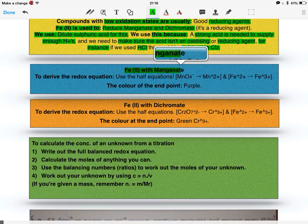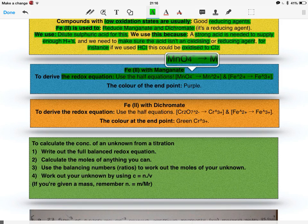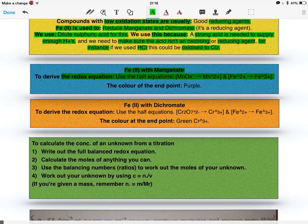Iron 2 plus with manganate. To derive the redox equation for this, we use the half equations, and these are manganate to manganese 2 plus, and iron 2 plus to iron 3 plus. The colour of the end point is purple.